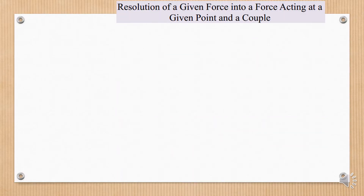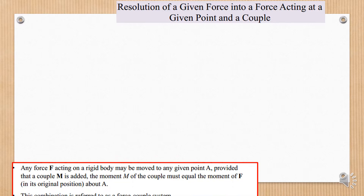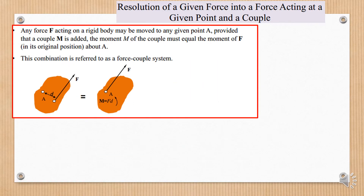The next part is the resolution of a given force into a force acting at a given point and a couple. What does it mean? To simplify: any force acting on a rigid body, we can move to any given point. So for example, a force located at point O — we can move this force to any given point.